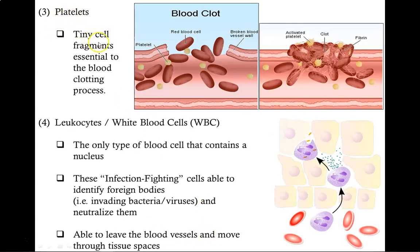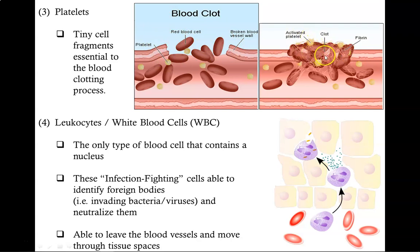Platelets are tiny cell fragments essential to the blood clotting process. When you get injured, you start to bleed. The damaged cells at the injury site send out signals to the platelets, which activates them and makes them sticky. These sticky platelets then attach themselves to the injured area, causing other blood cells to stick to that area, creating a blood clot. And this blood clot prevents further bleeding.